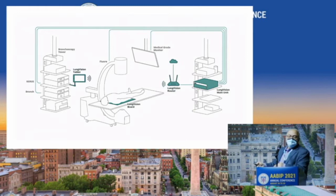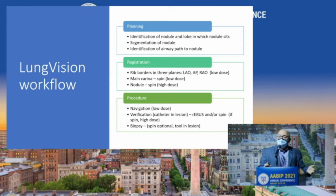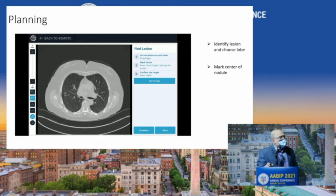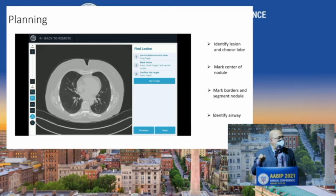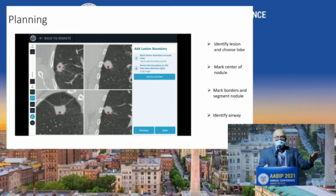Lung Vision works with everything you already have — nothing extra. The workflow is very simple: plan, register, and do your procedure. You identify the nodule, segment it like you would with anything else, do registration with rib borders in three planes, main carina, and the nodule, then proceed. For planning: identify the lesion, choose the lobe, mark the center of the nodule, segment the nodule, identify the airway — and you're done with planning.